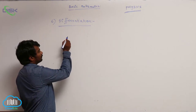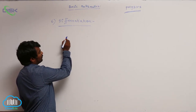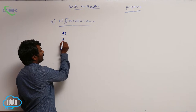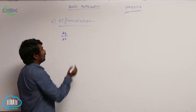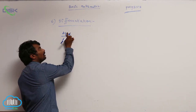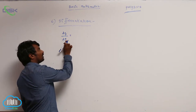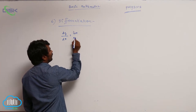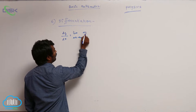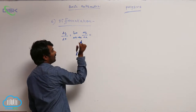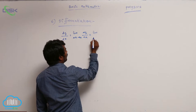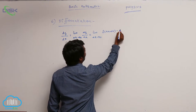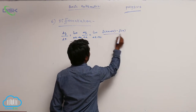Let us differentiate some functions with respect to x. We know the formula: differentiation of y with respect to x, dy by dx, also called the instantaneous change of y with respect to x. This is equal to the limit as delta x tends to 0 of delta y by delta x, which we can write as the limit as delta x tends to 0 of f of x plus delta x minus f of x, all divided by delta x.